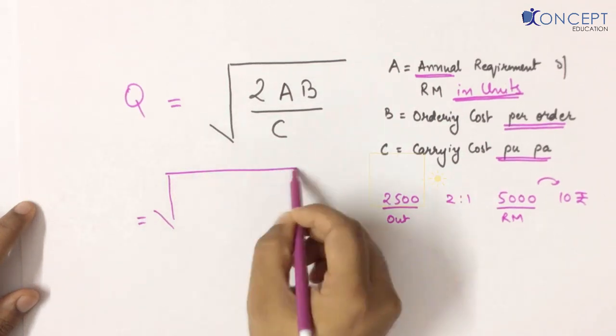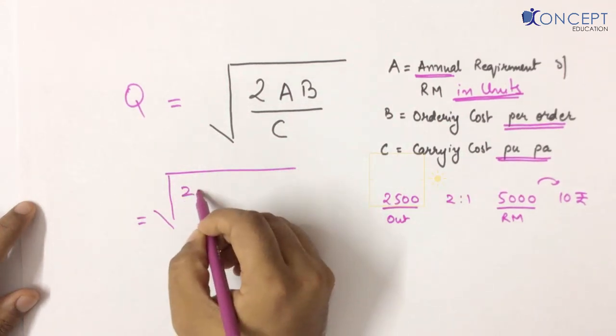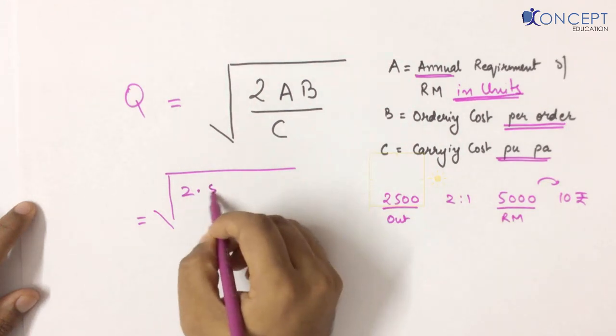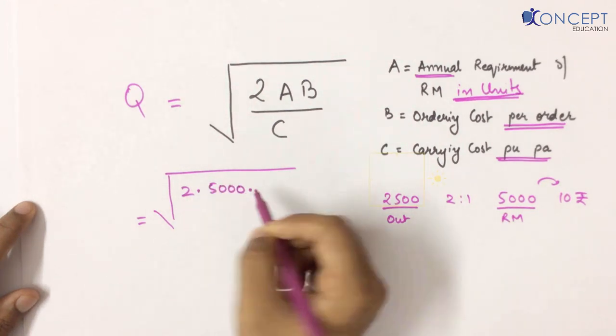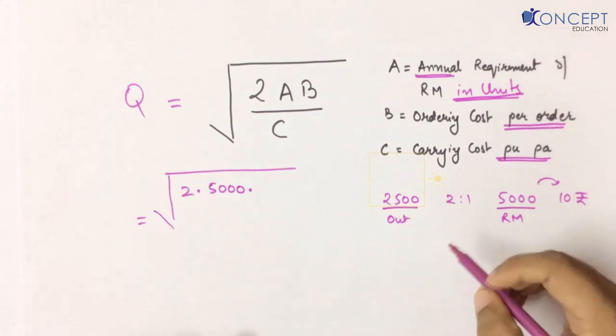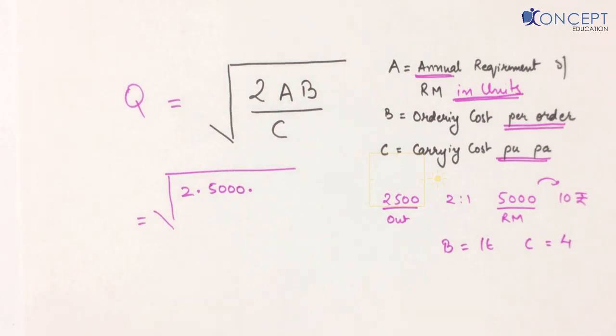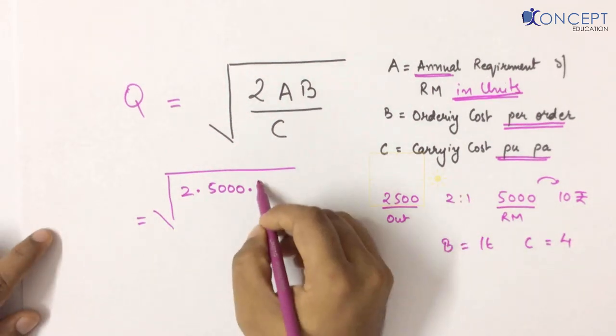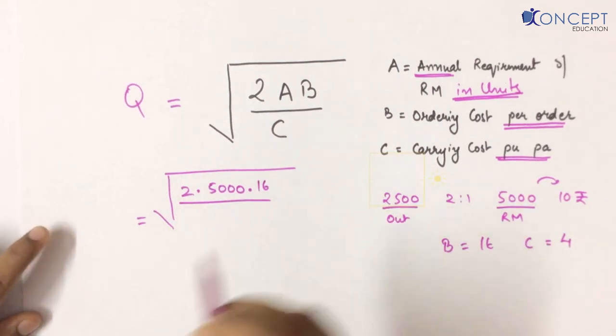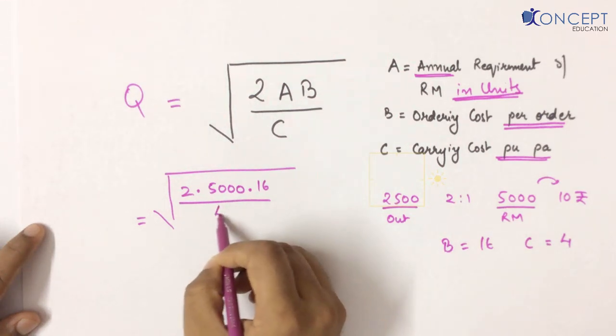Let's write under the root. A is 5000, annual requirement of raw material in units. B is 16, our ordering cost per order. And C is 4, carrying cost per unit per annum, which was given in the question. Because these are constant, fixed, and known to me from the very beginning of the year.